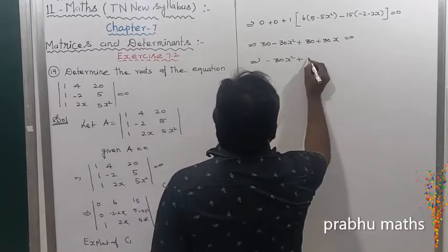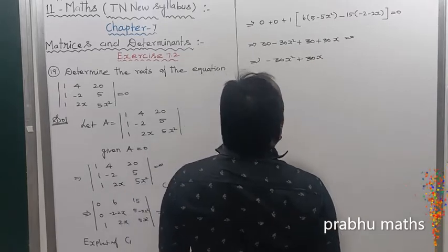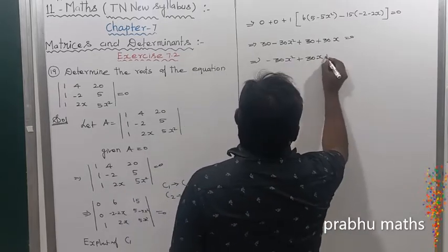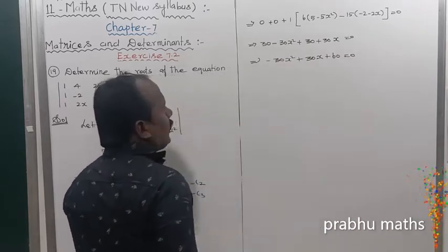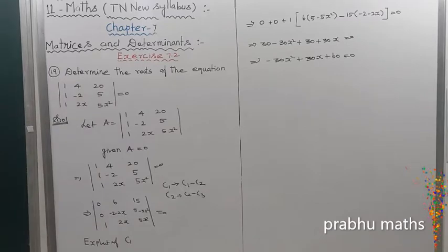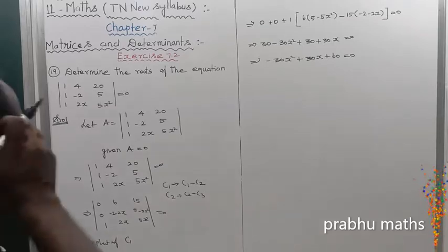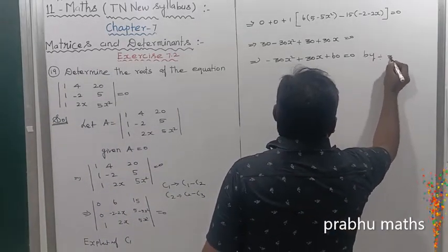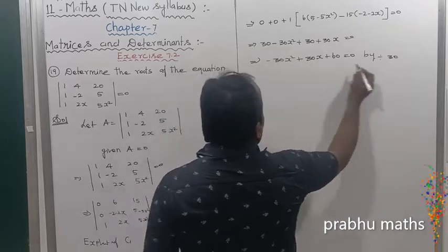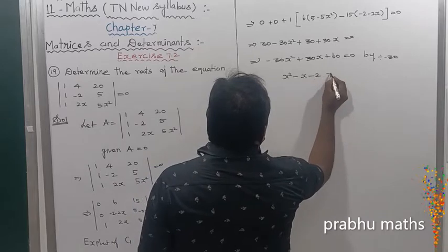Which implies: x terms equal to 0, constant terms equal to 0. So we are left with minus 30 x square plus 30 x, and the remaining two constant terms 30 plus 30 equals plus 60, all equal to 0. Dividing the whole equation by 30, we get x square minus x minus 2 equal to 0.